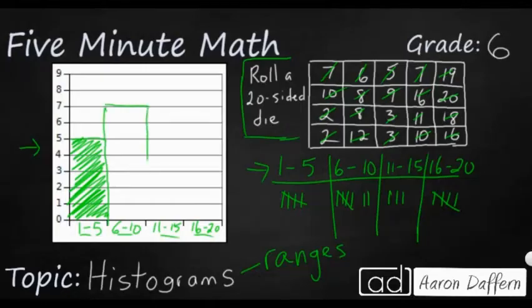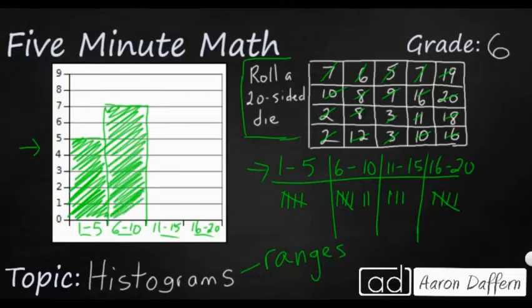In a histogram, you go from edge to edge of your range. The reason you do that is because this is supposed to show continuous numbers from 1 all the way up to 20. There are no blanks. There are no missing numbers that we're omitting from our histogram. So when it looks like this, it is going to look like a bar graph.